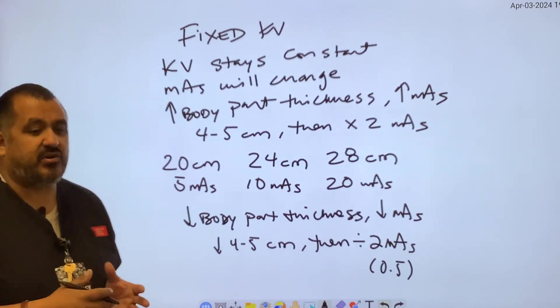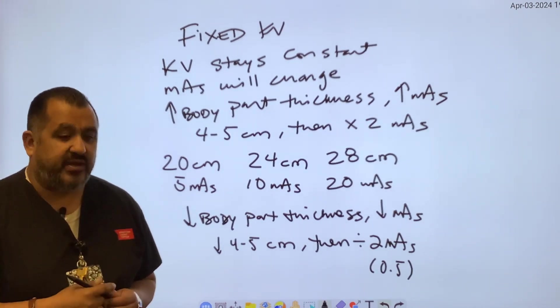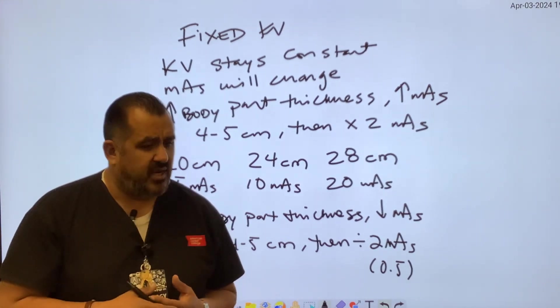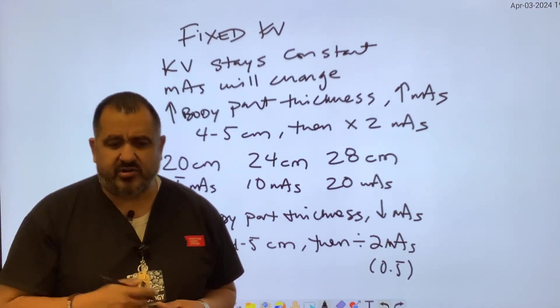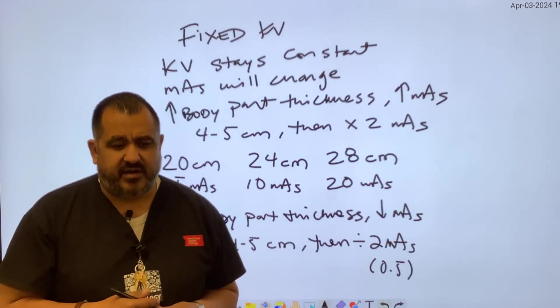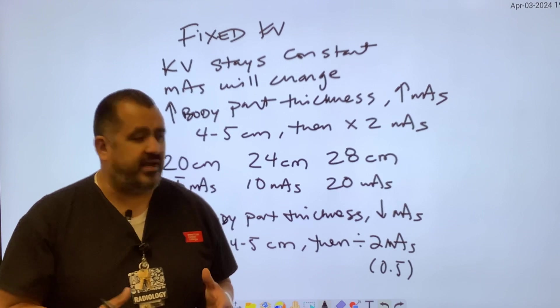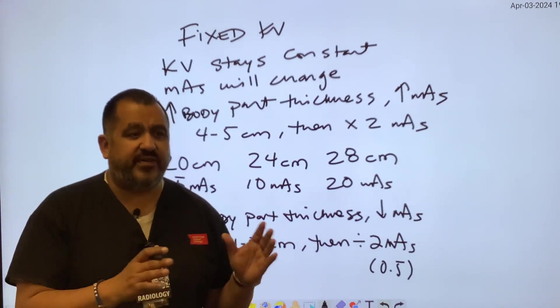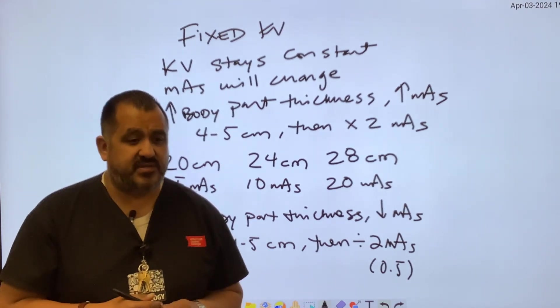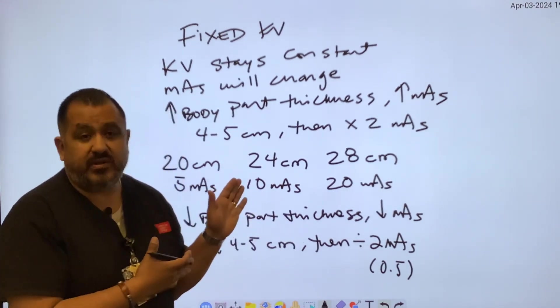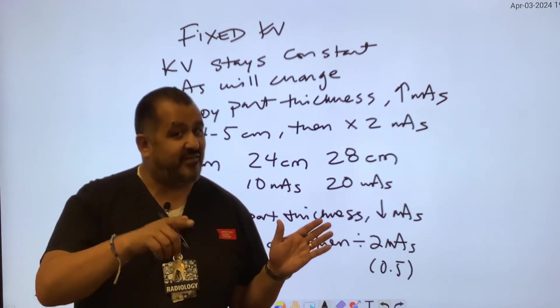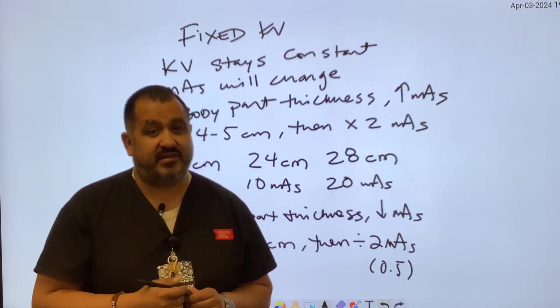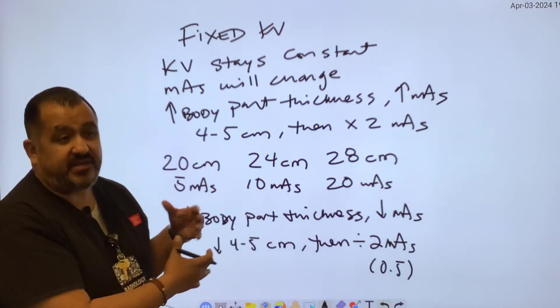So again, these are the two technique charts that we're working with in the field. Depending upon where you go at your clinical setting, hospital, imaging site, urgent cares, doctor's offices, wherever you're working at, you're going to have a technique chart and they can either be fixed or variable KV systems. Again, this is related to your ARRT outline. I want to emphasize that again. Everything is there on the content specifications on the ARRT outline.